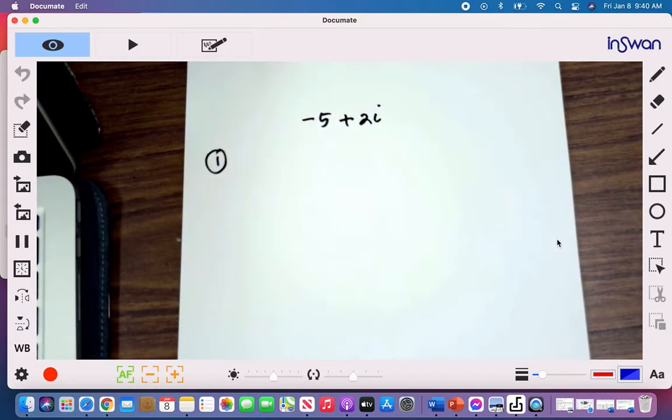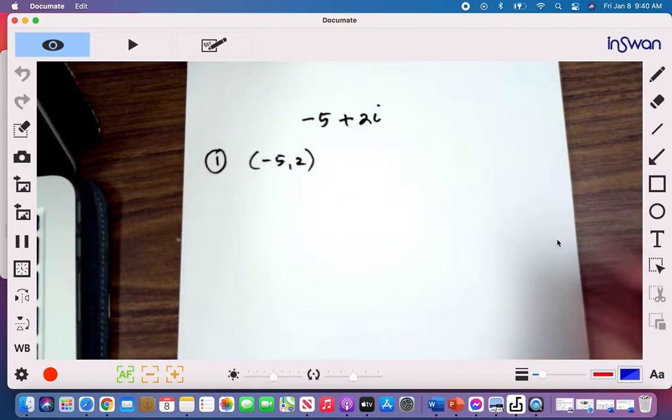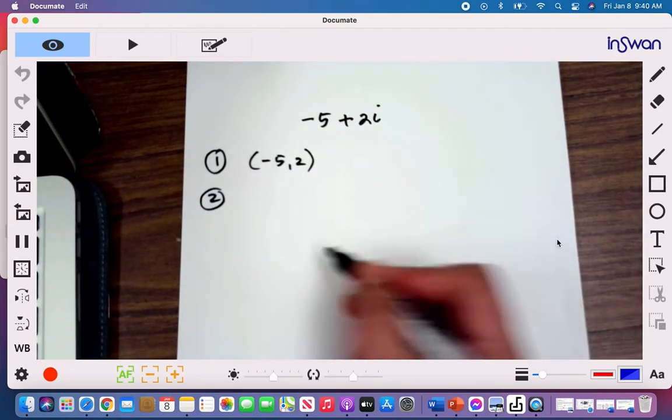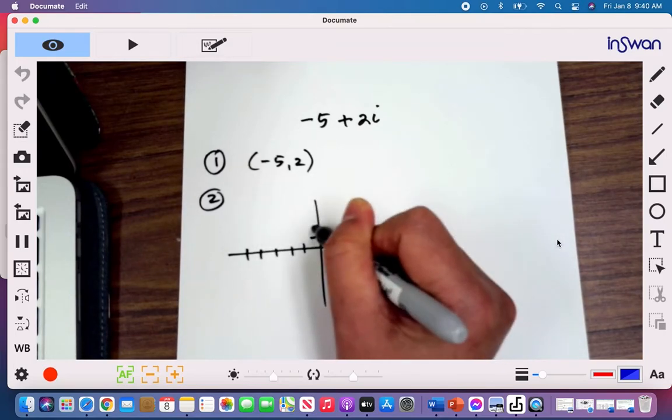So let's do step one. So that will be negative 5 and 2. And after that, we need to graph this point. So you have negative 5 and then positive 2.